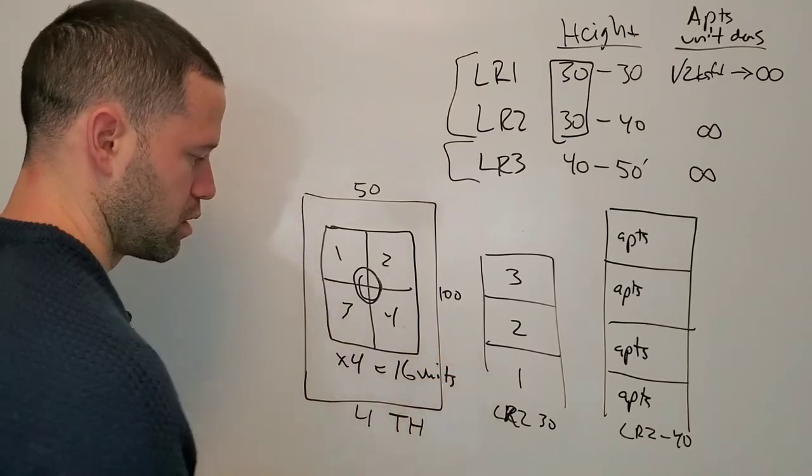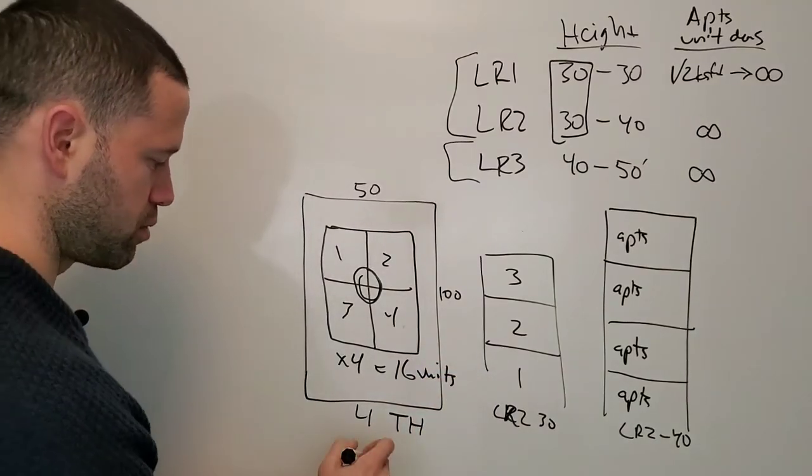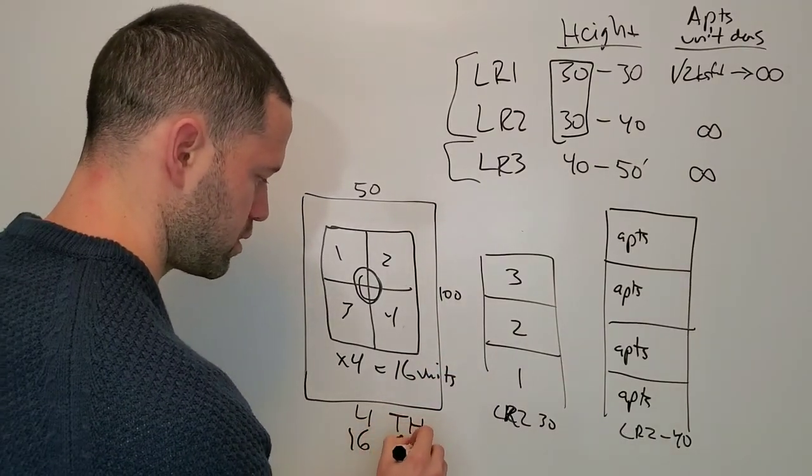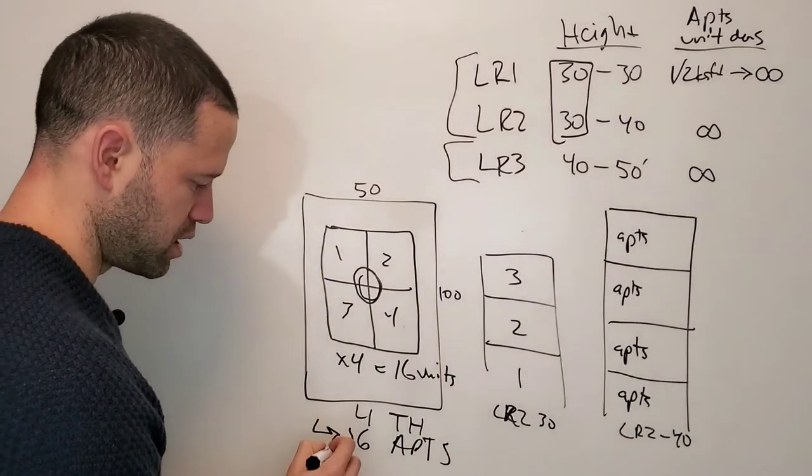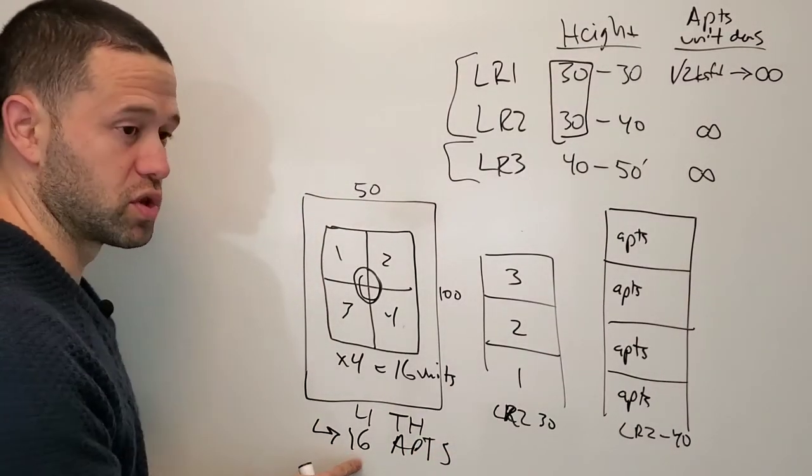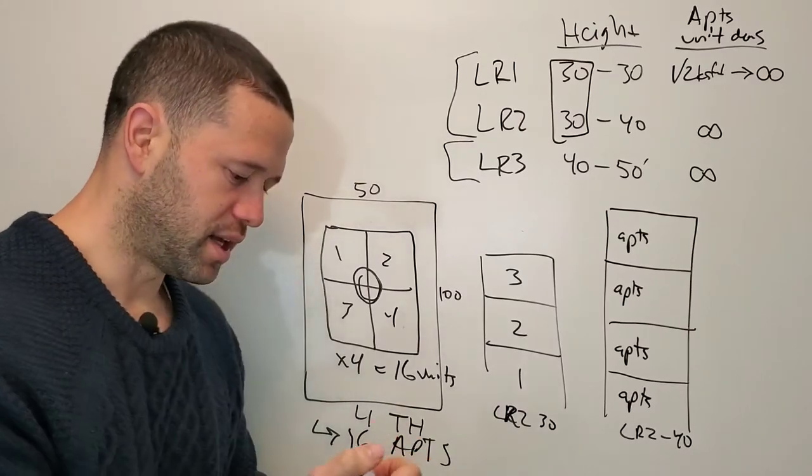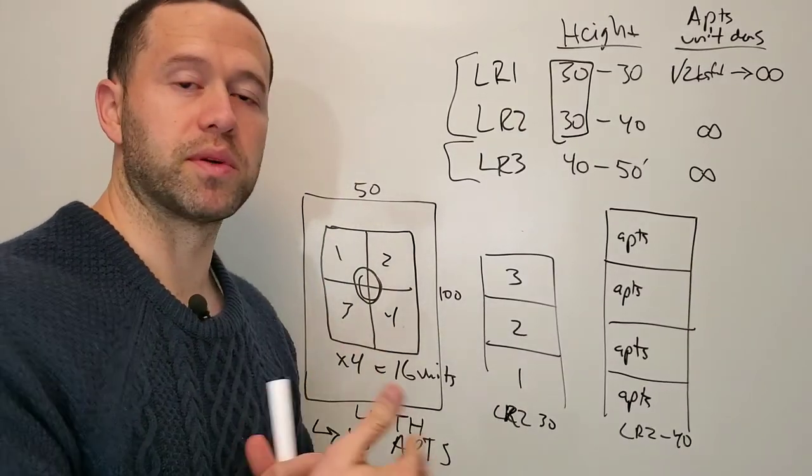You can either have four townhomes or sixteen apartments. A lot of times the equation is going to tilt you towards building sixteen apartments.